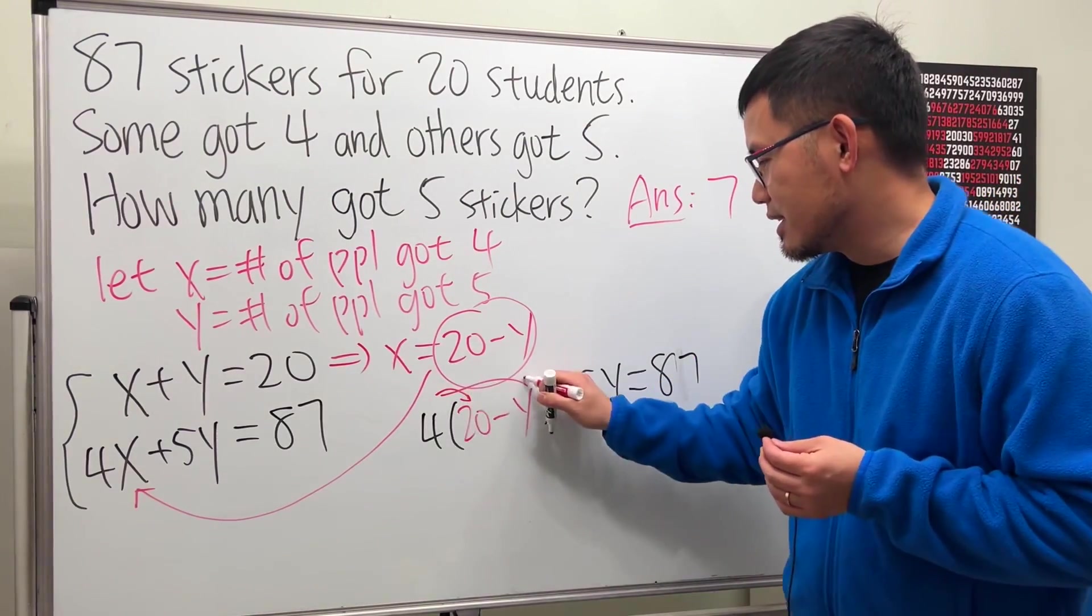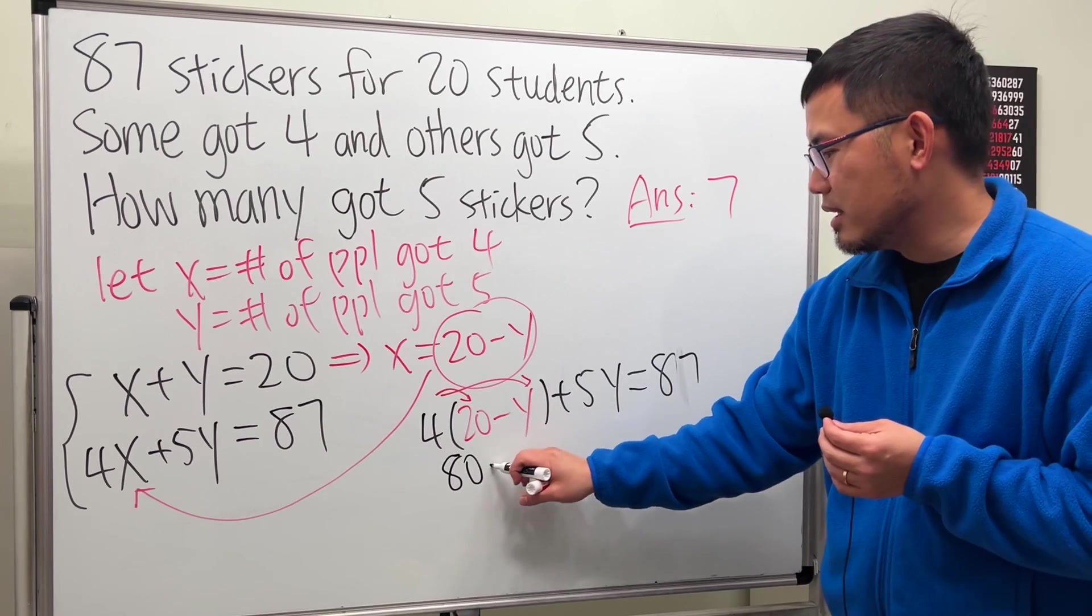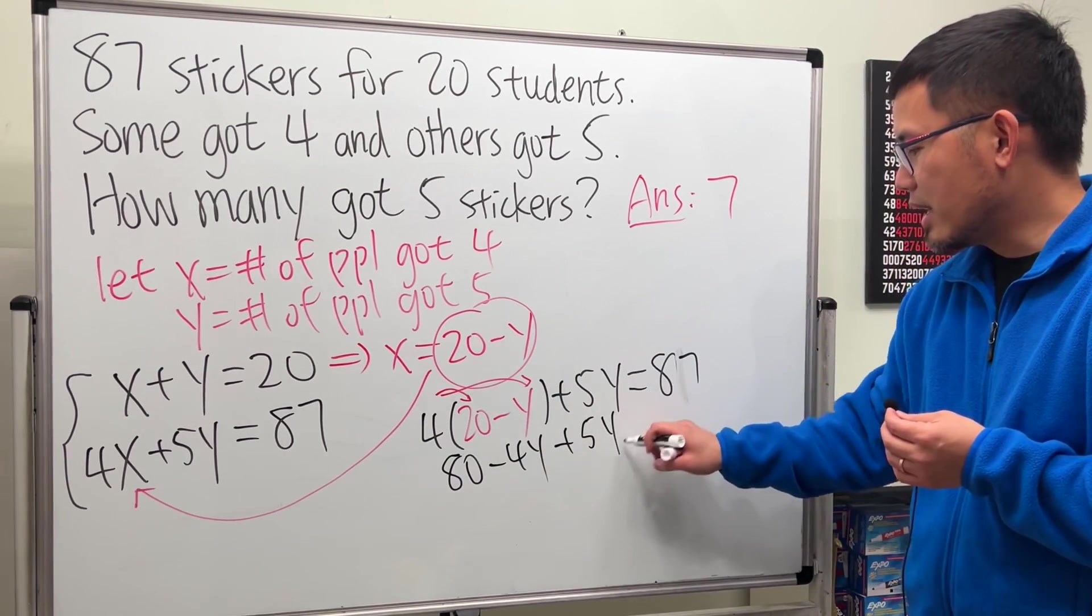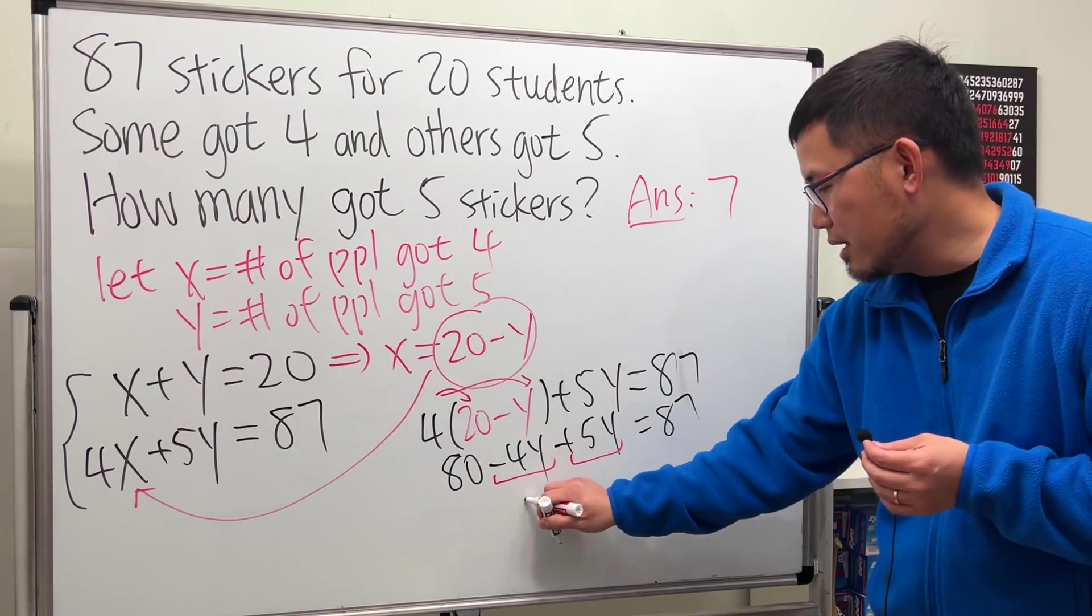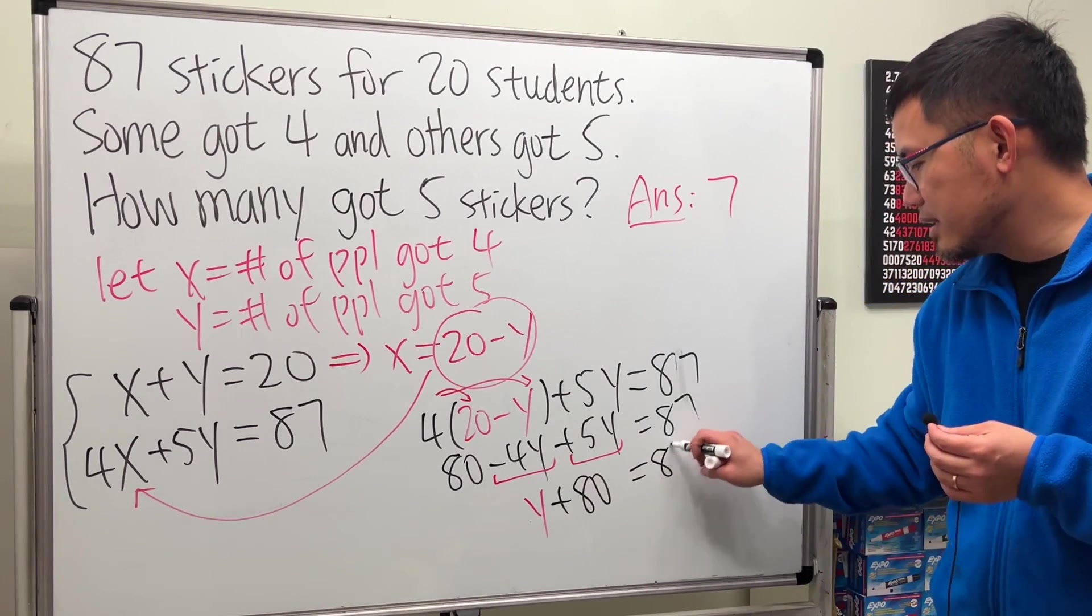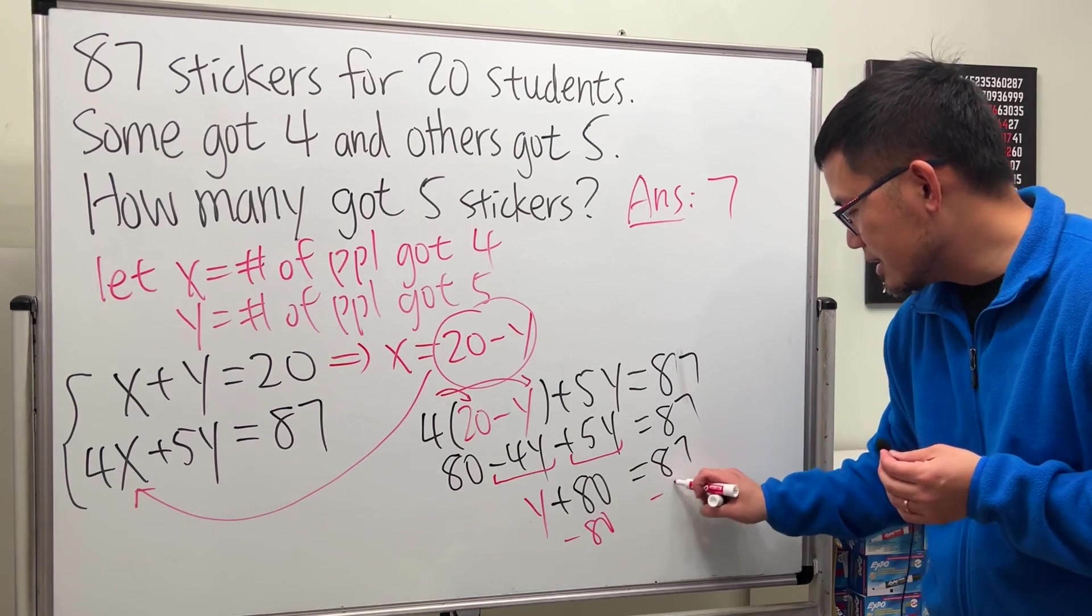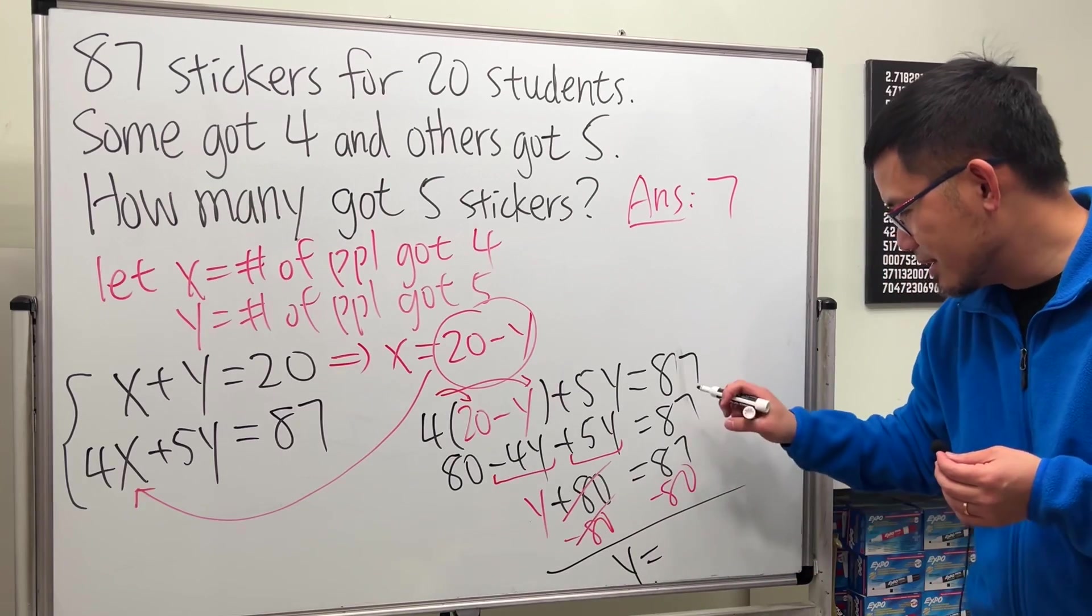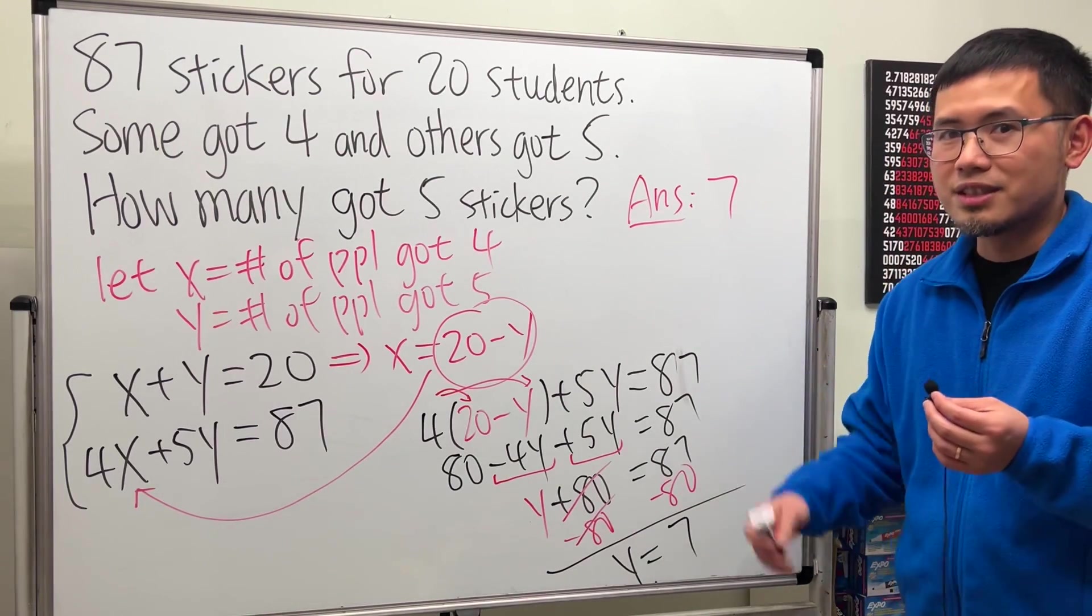That's pretty much it. But then let's just go ahead and solve it. So this right here will be 80. Four times 20 is 80, and then minus 4Y, and then plus 5Y equals 87. Combining this and that is Y, and that's plus 80 equals 87. Lastly, minus 80 on both sides, cancel, we get Y equals 87 minus 80 is 7, which of course is the same answer.